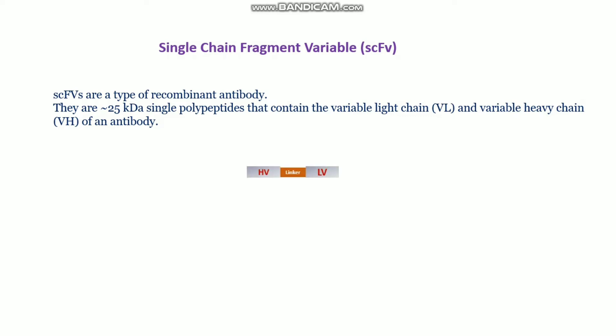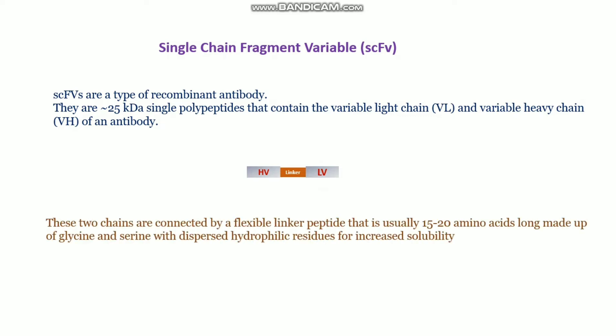Here is the schematic diagram of this ScFv. It's showing that it contains the heavy chain variable region and the light chain variable region of an antibody, and these are joined together by a linker. This linker is basically made of glycine and serine hydrophilic amino acids, and it is around 15 to 20 amino acids long.